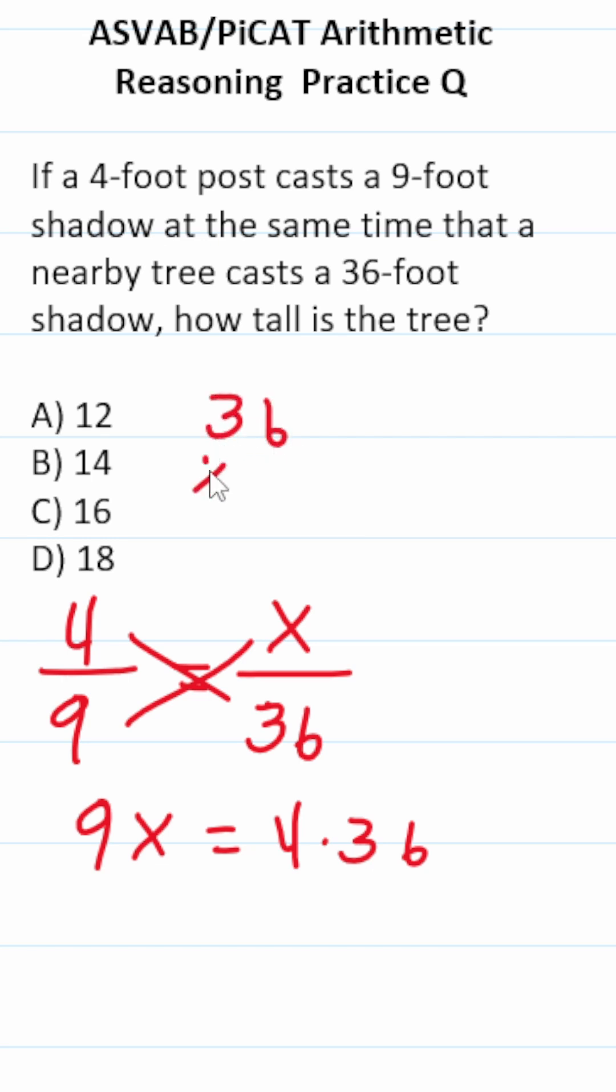What is 4 times 36? Let's do it off to the side if you can't do it mentally. This is 24, carry a 2, 12, 14. So this becomes 9x equals 144.